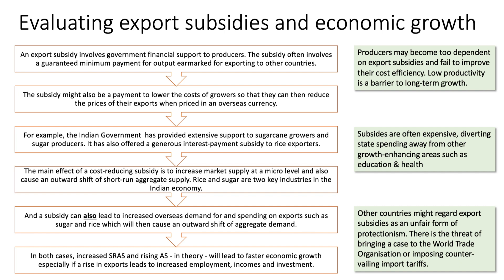The Indian government has provided extensive support to sugarcane growth — it's fine in the short term, but subsidies are often expensive. Billions of rupees spent on subsidies, and the state doesn't have unlimited resources. So if you spend more on subsidies, there could be an opportunity cost in the sense that state spending might be diverted away from other growth-enhancing areas, such as improvements in education, health care and housing.